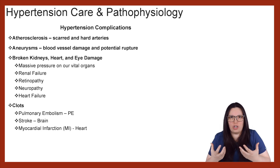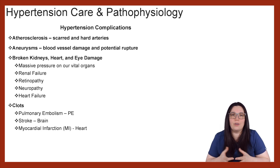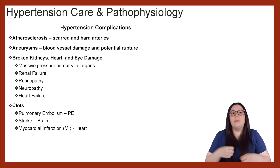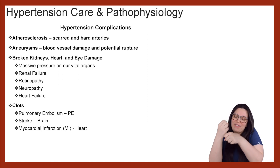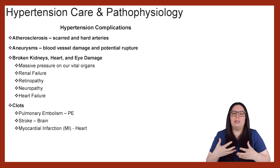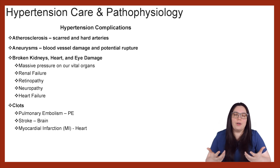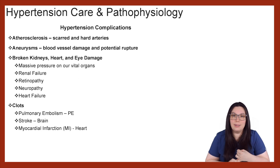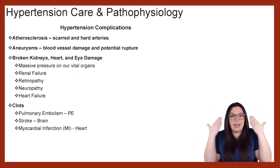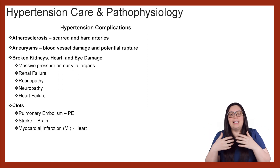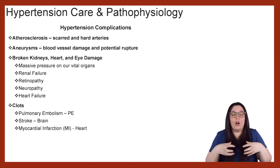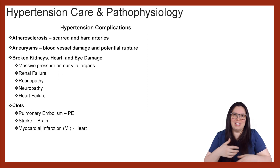And then lastly, a huge complication of hypertension are clots. If the heart can't pump effectively because of all that vasoconstriction happening throughout the body, you're going to start to develop clots in your heart. And if those clots get out when they're eventually pushed out into the body, we can have clots in our lungs — also known as a pulmonary embolism — a clot in our brain, also known as a stroke, and then lastly, a clot in our heart, known as a myocardial infarction.